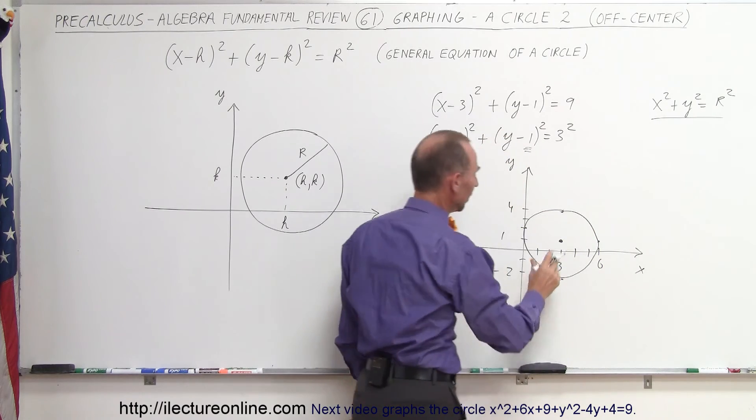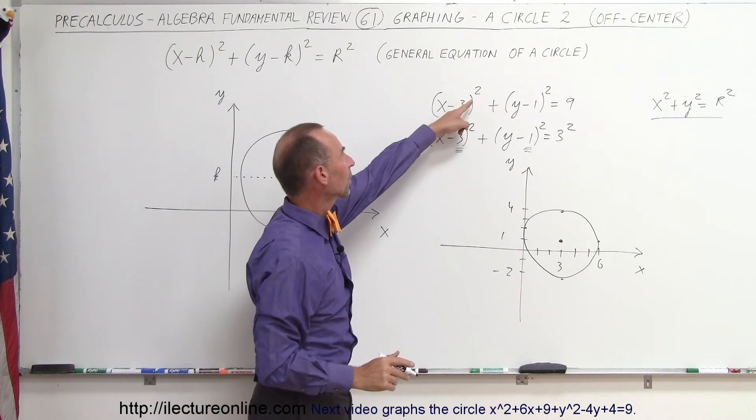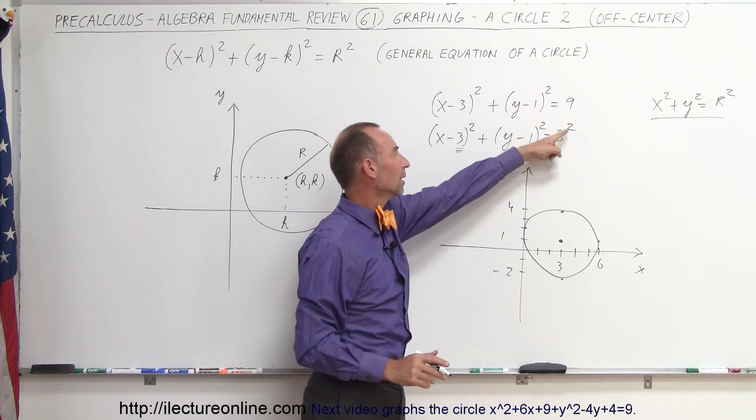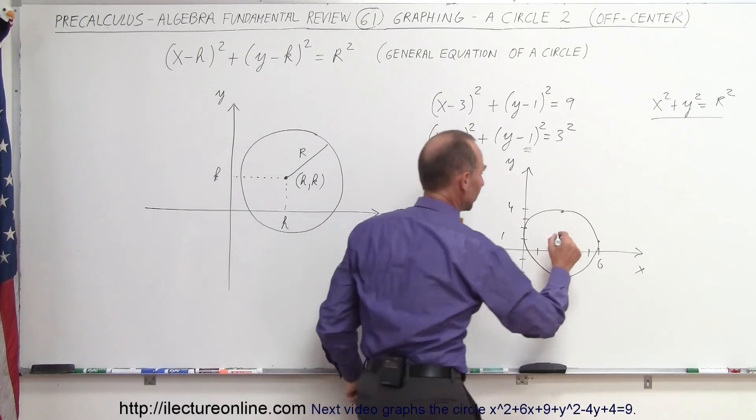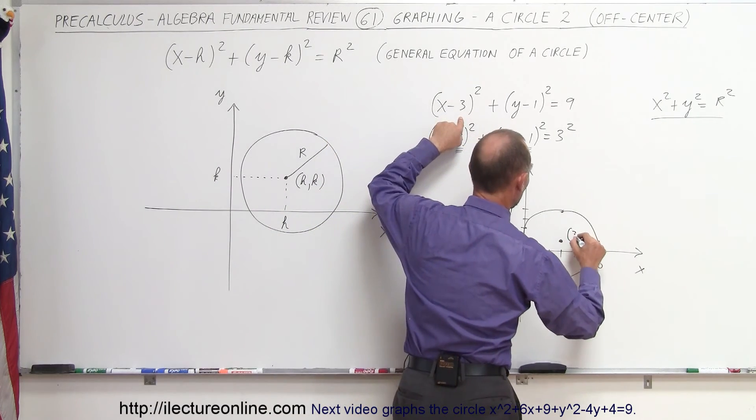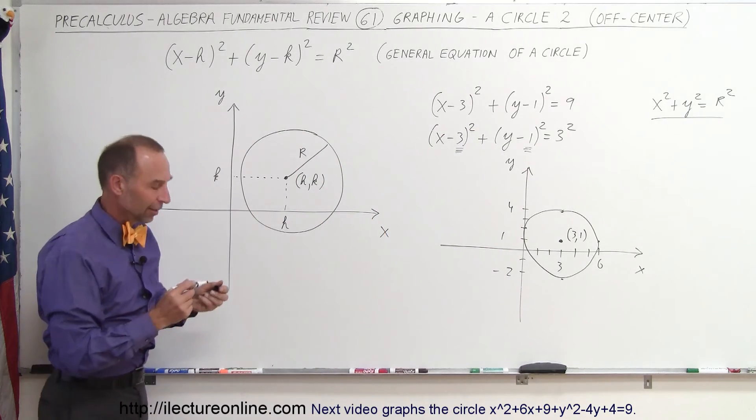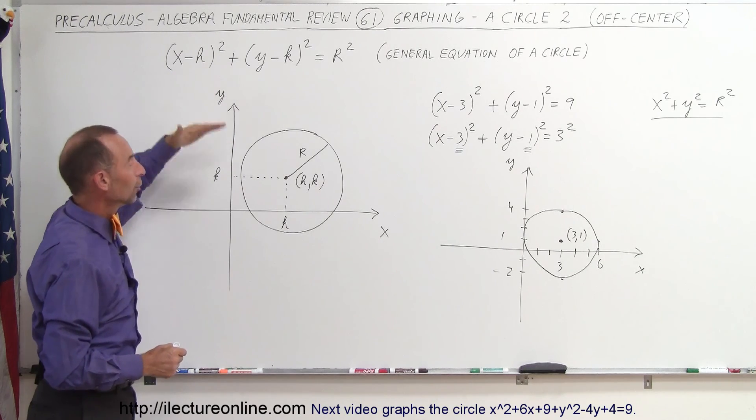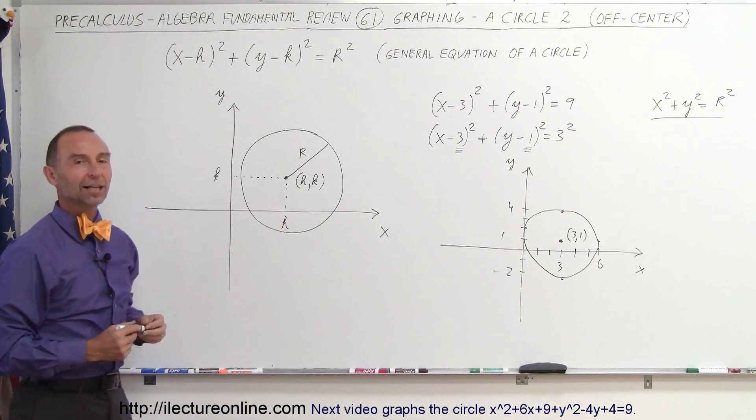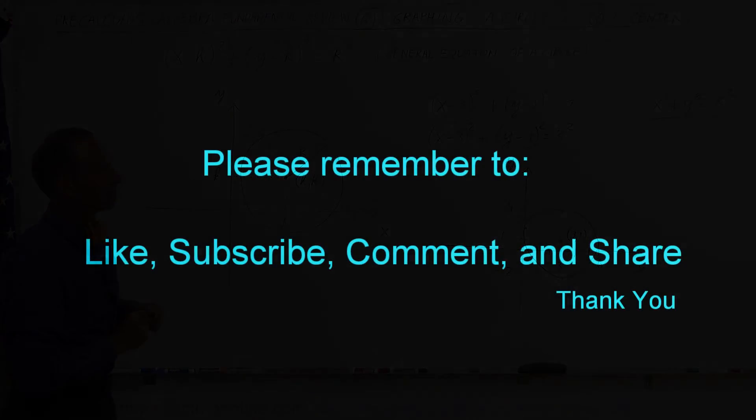There we go. That's a circle represented by this equation: (x - 3)² + (y - 1)² = 3². The radius is 3. The coordinates right there are at location 3 and 1. And that's how we do that. So whenever you have a circle that's offset, you have to somehow put it in this format in order to be able to graph it. Thank you.